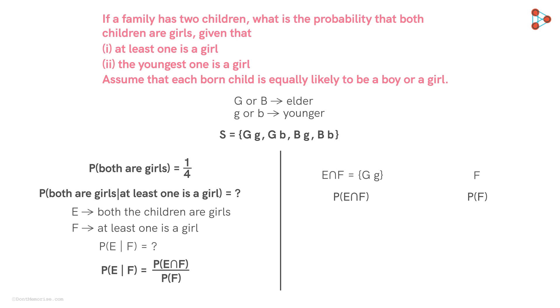Now what about P of F? The event F will have all those possible outcomes where at least one child is a girl. Hence, the sample set will be written as shown. Now that we have the sample sets ready, let us find out the probabilities.